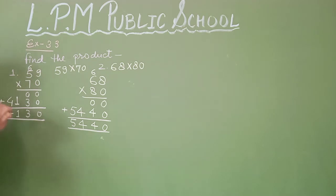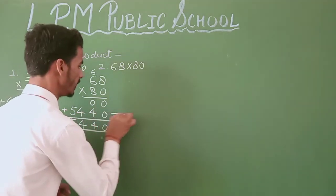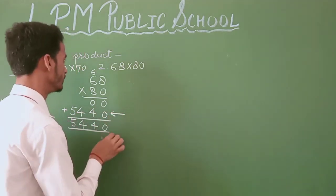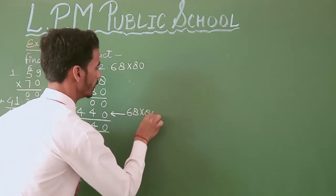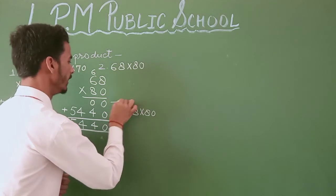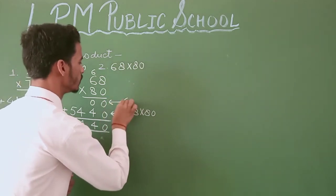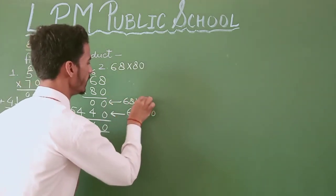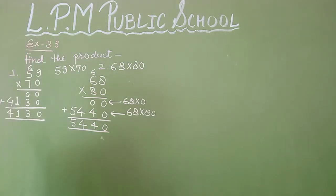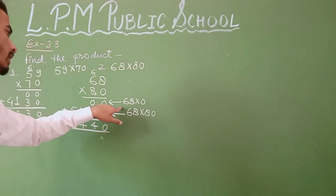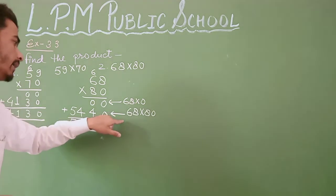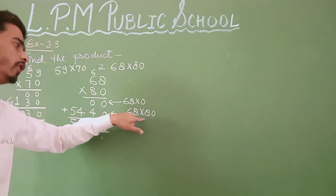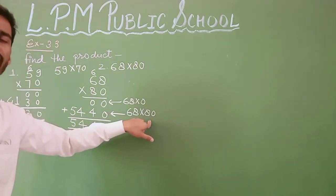That is the multiplication of 10s — 68 multiplied by 80 — and that is the multiplication of 1s — 68 multiplied by 0.